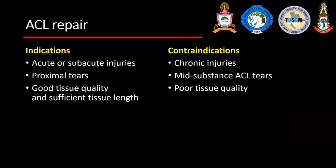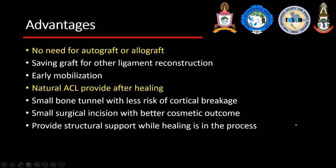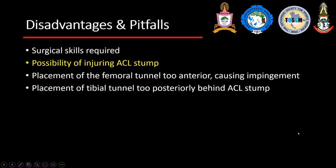In cases of good tissue quality, we can do ACL repair. But it is not promising in some cases such as chronic injury, mid-substance tears, or poor tissue quality — for those we need an autograft or allograft. When repair is appropriate, we don't need to sacrifice the autograft, so we can save the ligament and provide the native, proprioceptive ACL. It does require surgical skill.